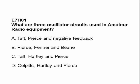What are three oscillator circuits used in amateur radio equipment? A: Taft, Pierce, and negative feedback; B: Pierce, Finner, and Bean; C: Taft, Hartley, and Pierce; or D: Colpitts, Hartley, and Pierce. The answer is D — Colpitts, Hartley, and Pierce.